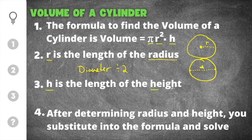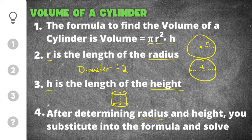H in the formula is the length of the height. If we draw a simple cylinder, the height goes from one base all the way to the other — it is the distance from one base to the other base. After you determine radius and height, you substitute those into the formula and solve. Once you know radius you substitute it in for r, and once you know height you substitute it in for h.